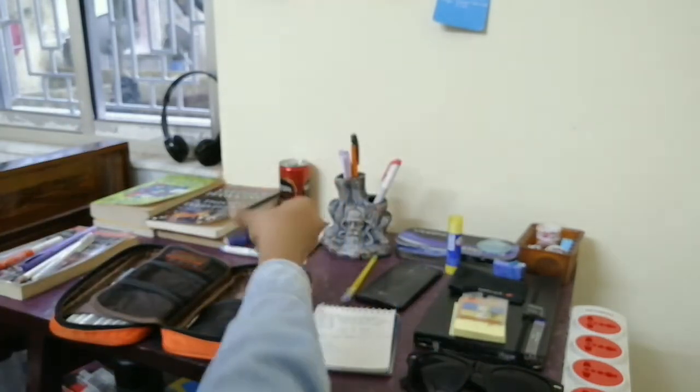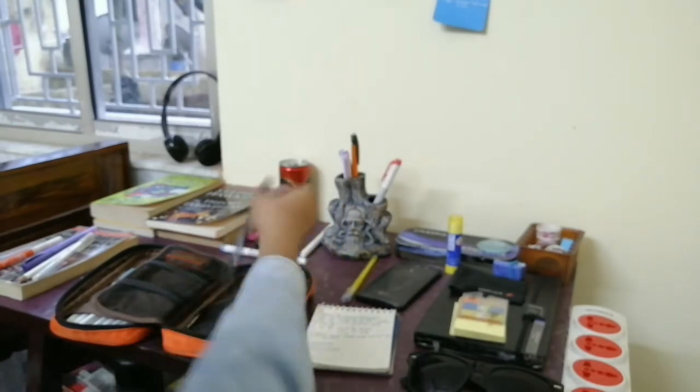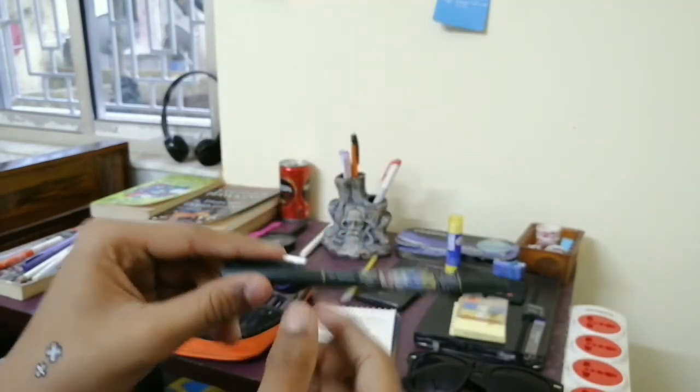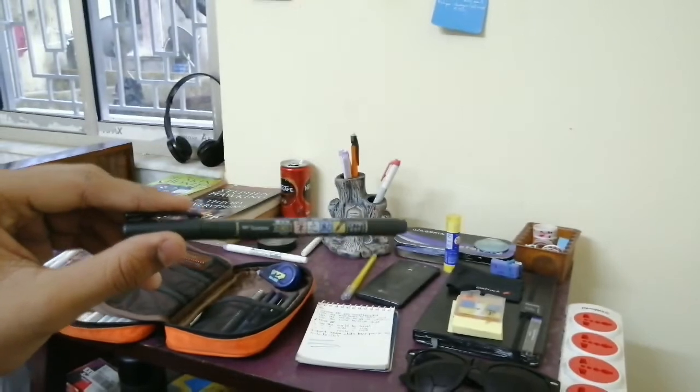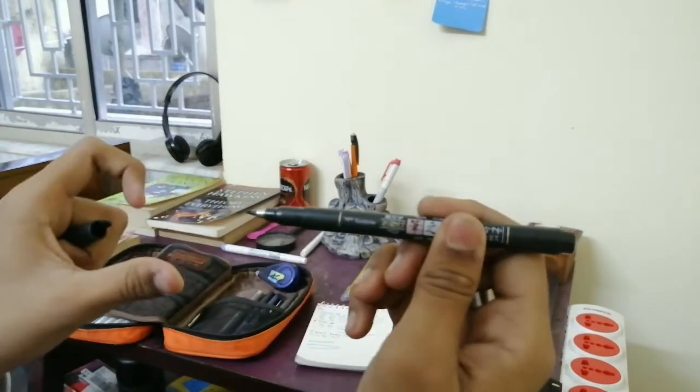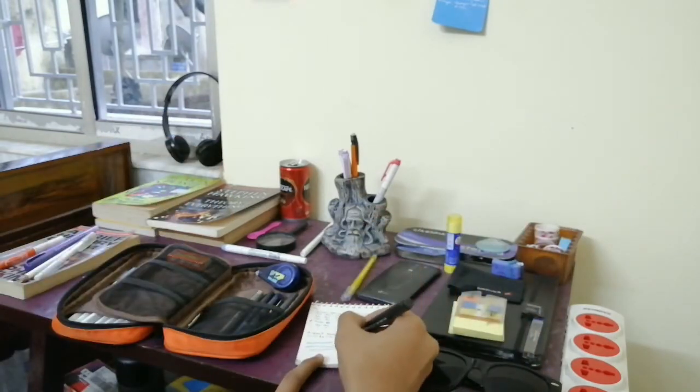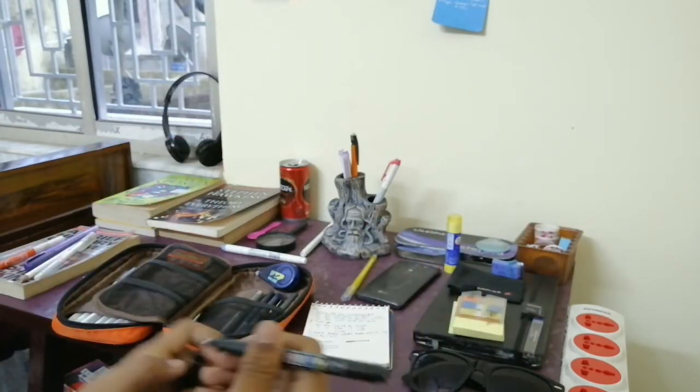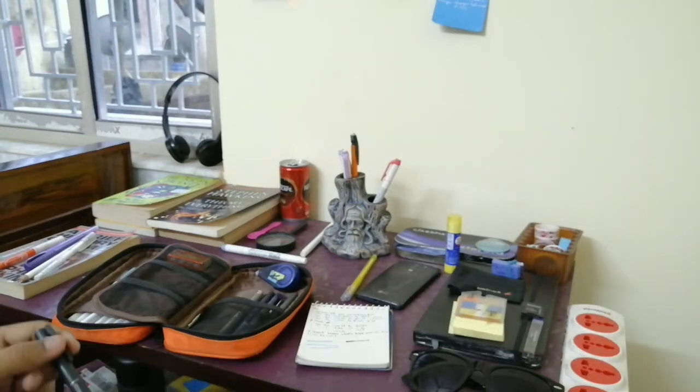Next thing is Tombow Fudenosuki. This is a soft tip one, so both are same, soft tip, don't have any difference.